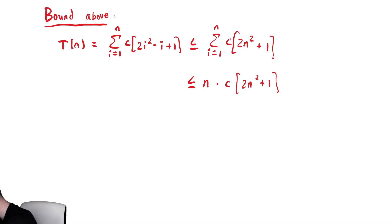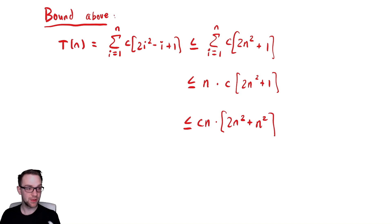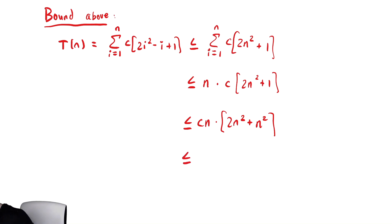Let's finish bounding this above. We have cn times 2n² plus — replacing one with n², the largest term that appears there. So we have 2n² plus n², that's 3n². This is going to be 3n² times cn, which is 3cn³.